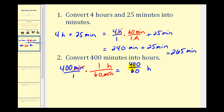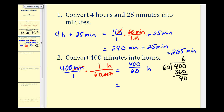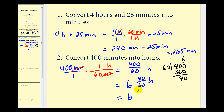Now the units of minutes have simplified out, leaving four hundred divided by sixty hours. We need to perform this division: there are six sixties in four hundred, giving three hundred sixty with a remainder of forty. So we have six and forty-sixtieths hours. Forty-sixtieths simplifies — they share a common factor of twenty — giving us six and two-thirds hours.